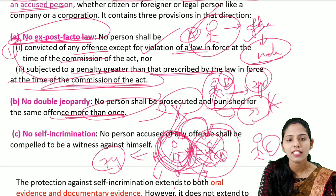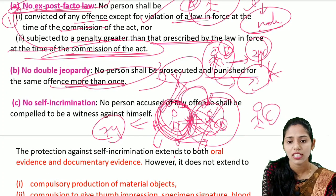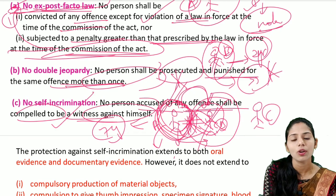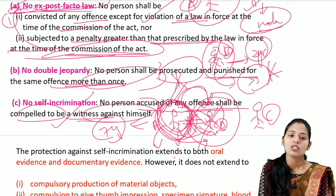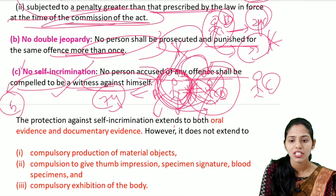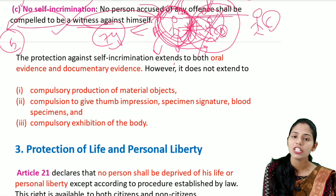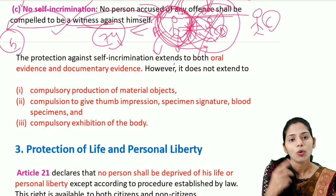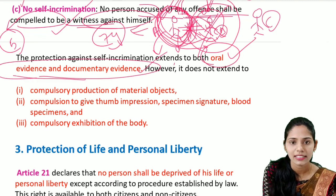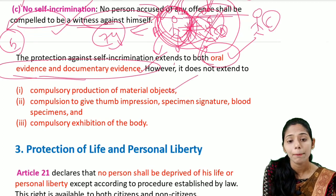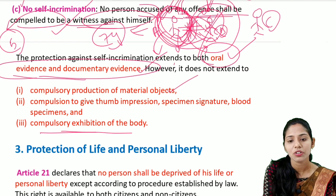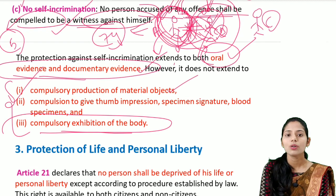No self-incrimination means no person accused of any offense shall be compelled to be a witness against himself. In the American Constitution this is the Fifth Amendment. The protection against self-incrimination extends to both oral evidence and documentary evidence, but it does not extend to compulsory production of material objects, compulsion to give thumb impressions or specimen signatures or blood specimens, or compulsory exhibition of the body.